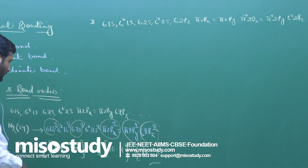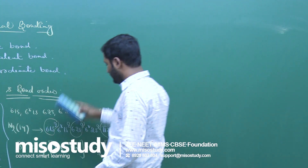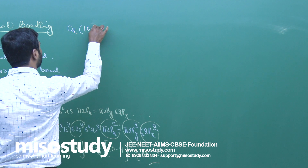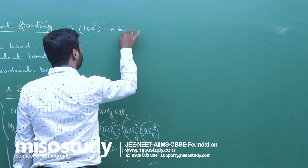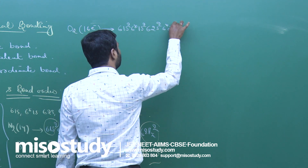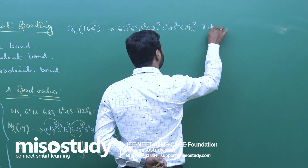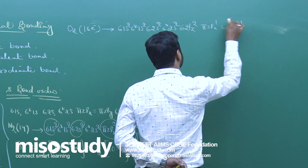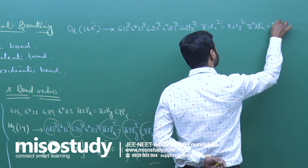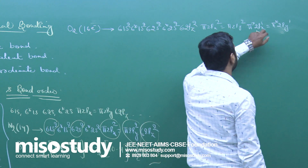In case of oxygen and fluorine, consider O2 — a 16-electron system. The configuration is: σ1s², σ*1s², σ2s², σ*2s², σ2pz², π2px¹, π2py¹, π*2px¹, π*2py¹, giving a total of 16 electrons.